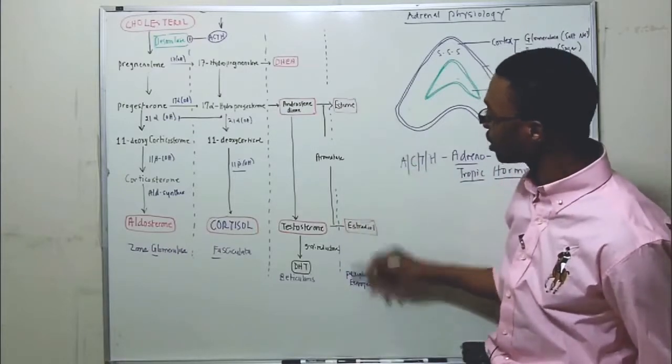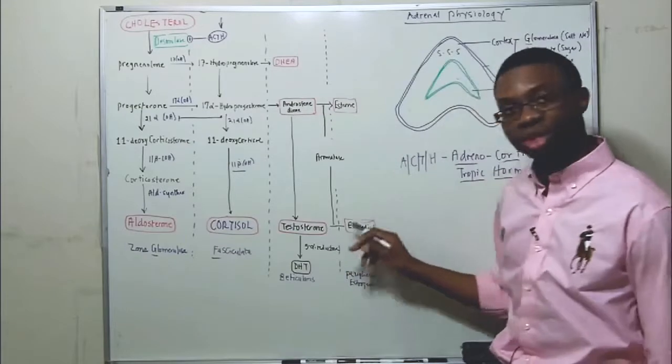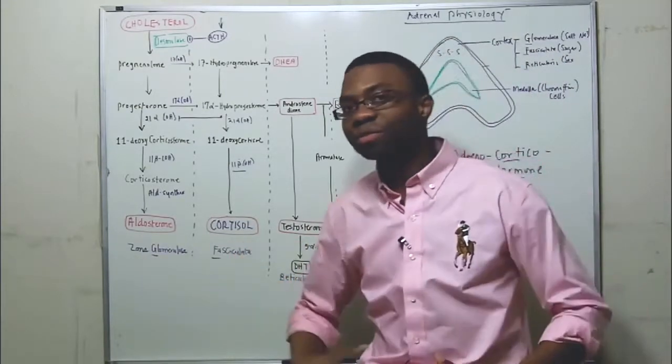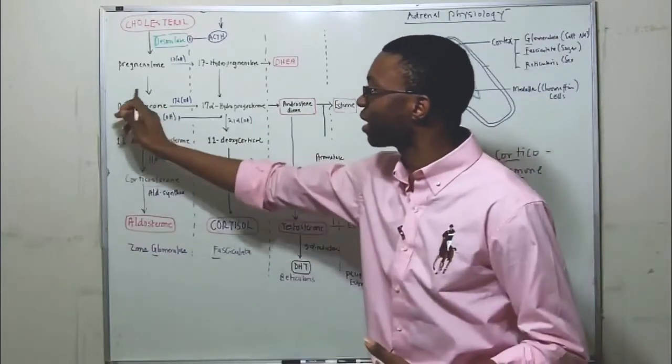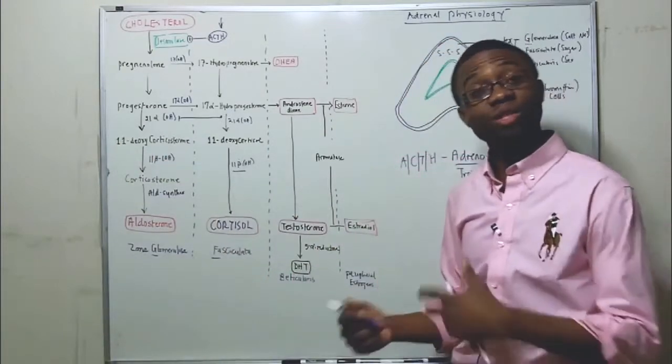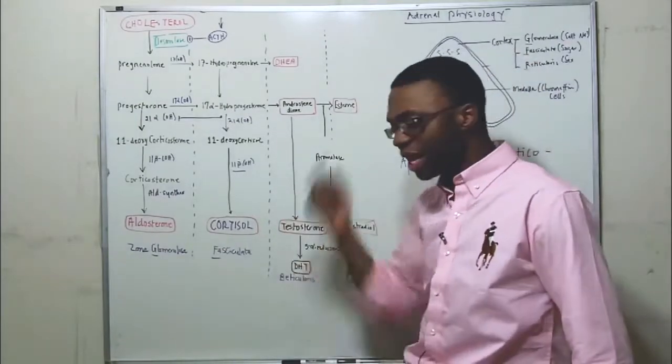Now, 5-alpha reductase is now going to make dihydrotestosterone. And this is all happening in the reticularis. These hormones that you see here are going to be active peripherally. That's why estrogen causes women to have breasts, they get proliferation inside the uterus, they have a menstrual cycle. They've got their progesterone also coming from the ovaries, so not just from the adrenal gland. Now, this is a crazy pathway.